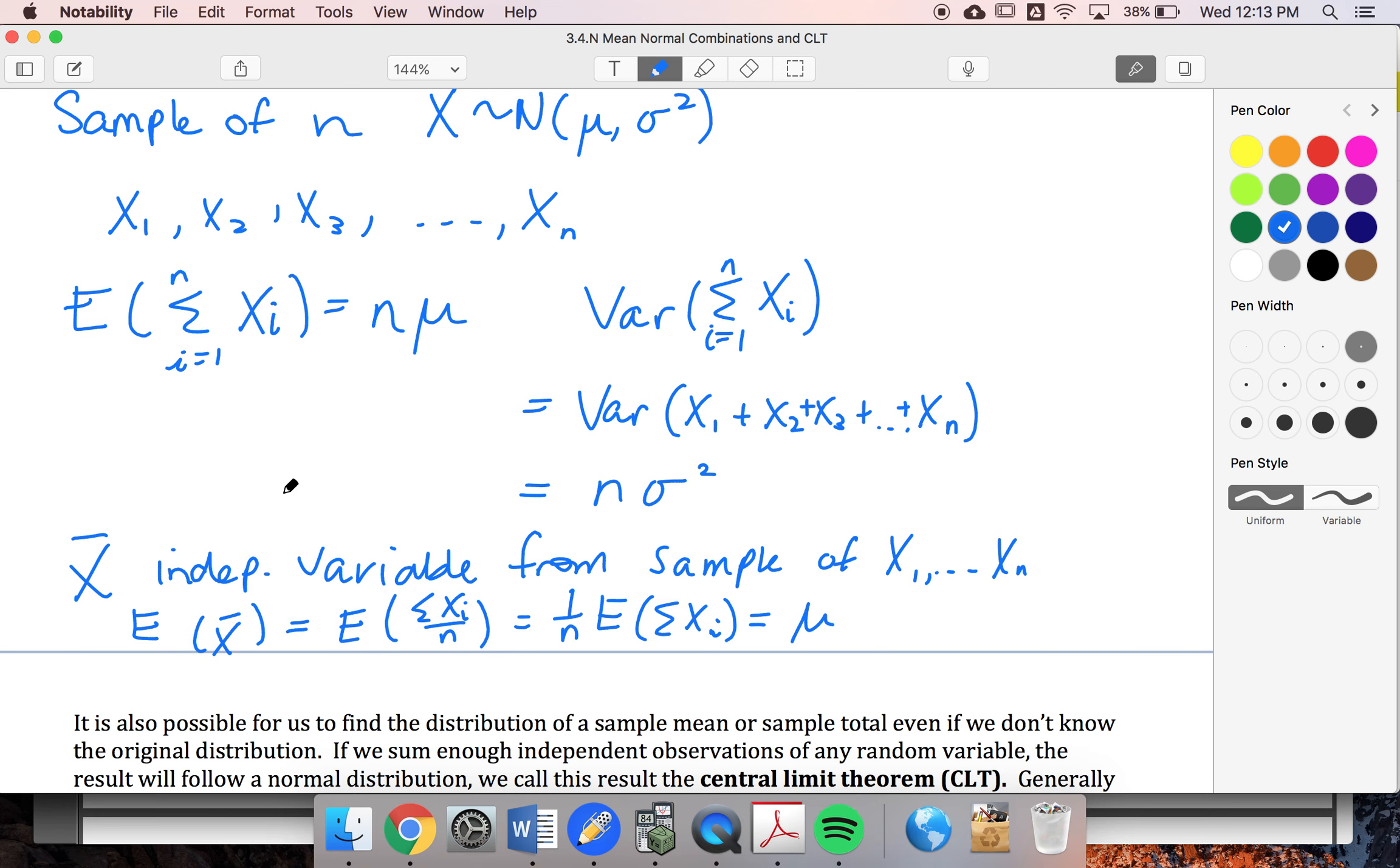Now, if I look at my variance, I'm going to say that my variance of x bar is the same thing. The variance of the sum of the different xi's over n. Well, that's going to be 1 over n squared times this value, which is going to give me sigma squared over n.